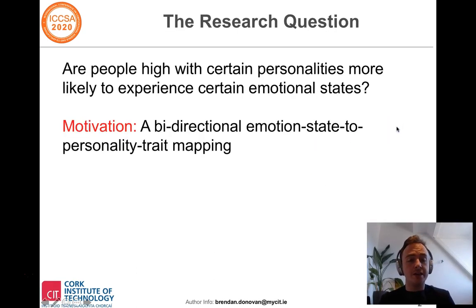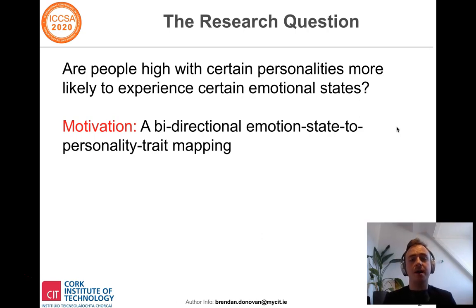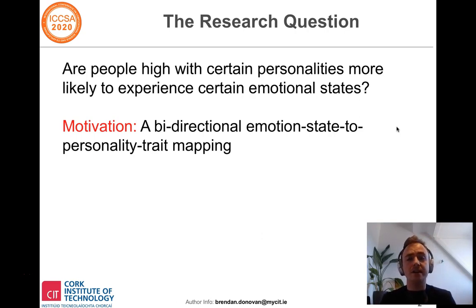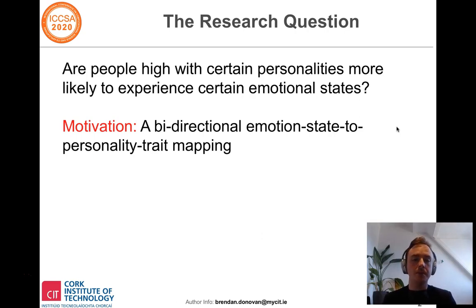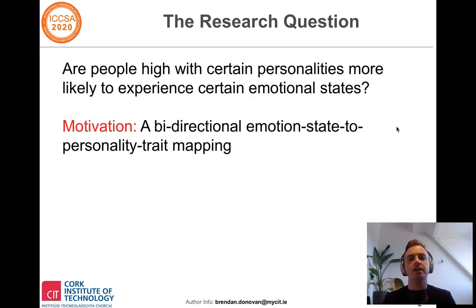In terms of other motivations, we were primarily interested in creating a bi-directional emotional state to personality trait mapping. We believe that such a mapping could be of great use to psychology researchers and affective computing researchers. For example, if you had a dataset with the personality trait characteristics of a participant group and you wanted to infer their likely future emotional reactions — say, when presenting them an advertisement — you could use this bi-directional mapping to infer likely emotional reactions based on their prior personality trait answers.